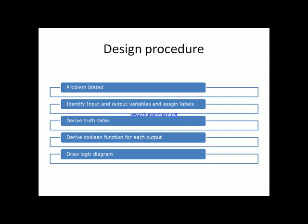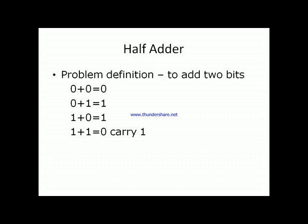Now let us discuss a combinational circuit example that illustrates the entire step-by-step procedure. We take the half adder combinational circuit. The five steps are: problem definition; identify input/output variables and assign letters; derive the truth table; derive the simplified Boolean function for each output variable; and draw the logic circuit diagram. The half adder is used to add two bits.